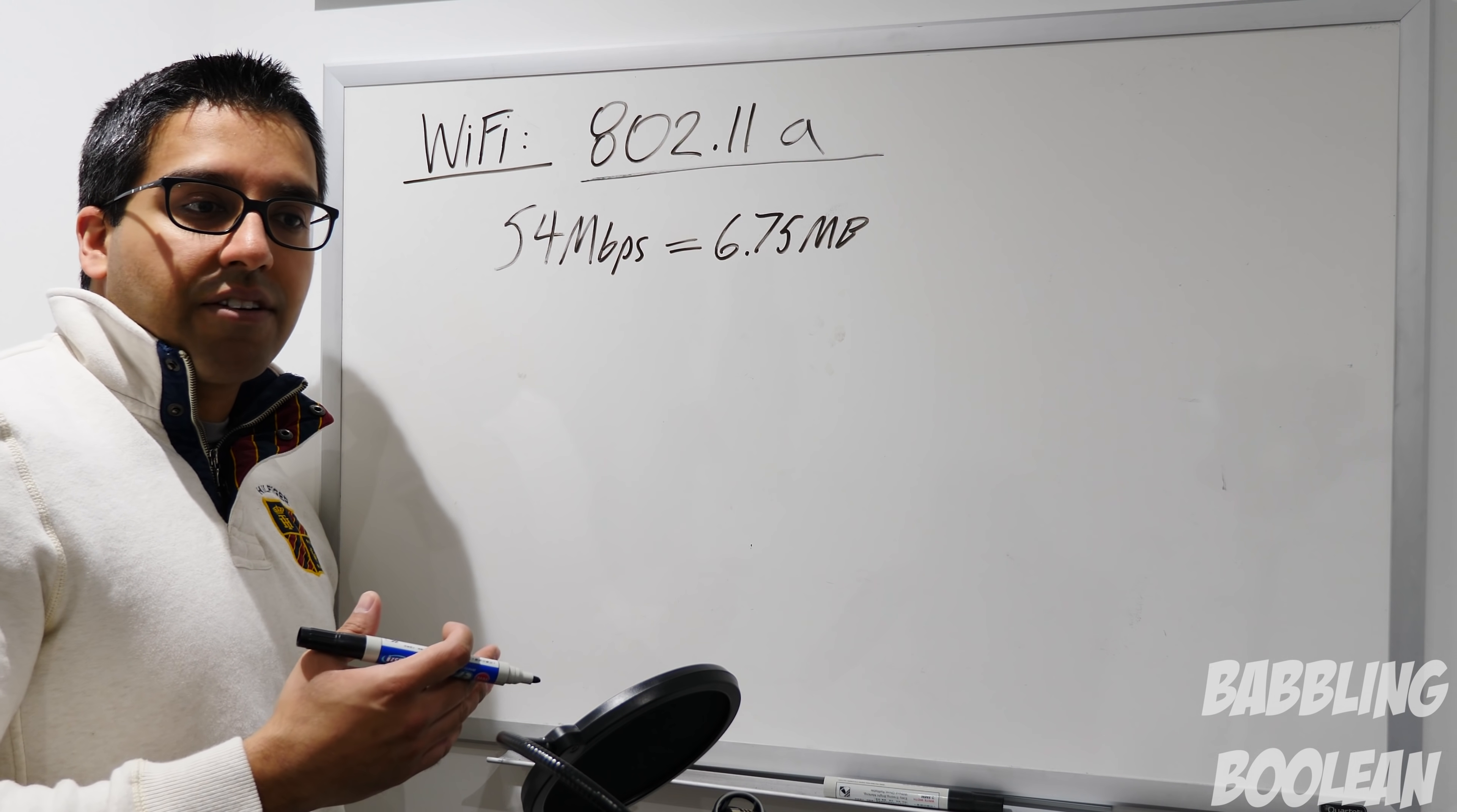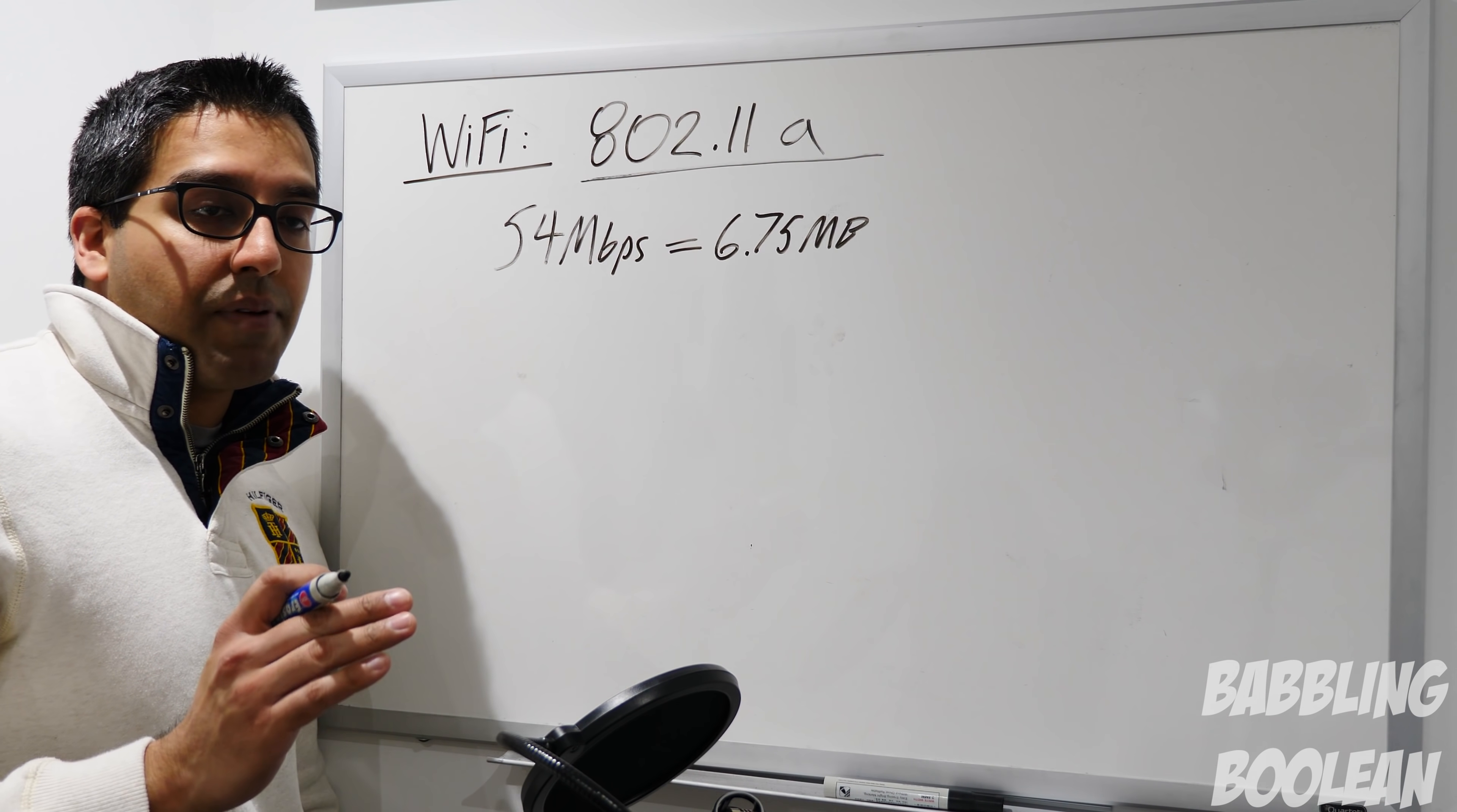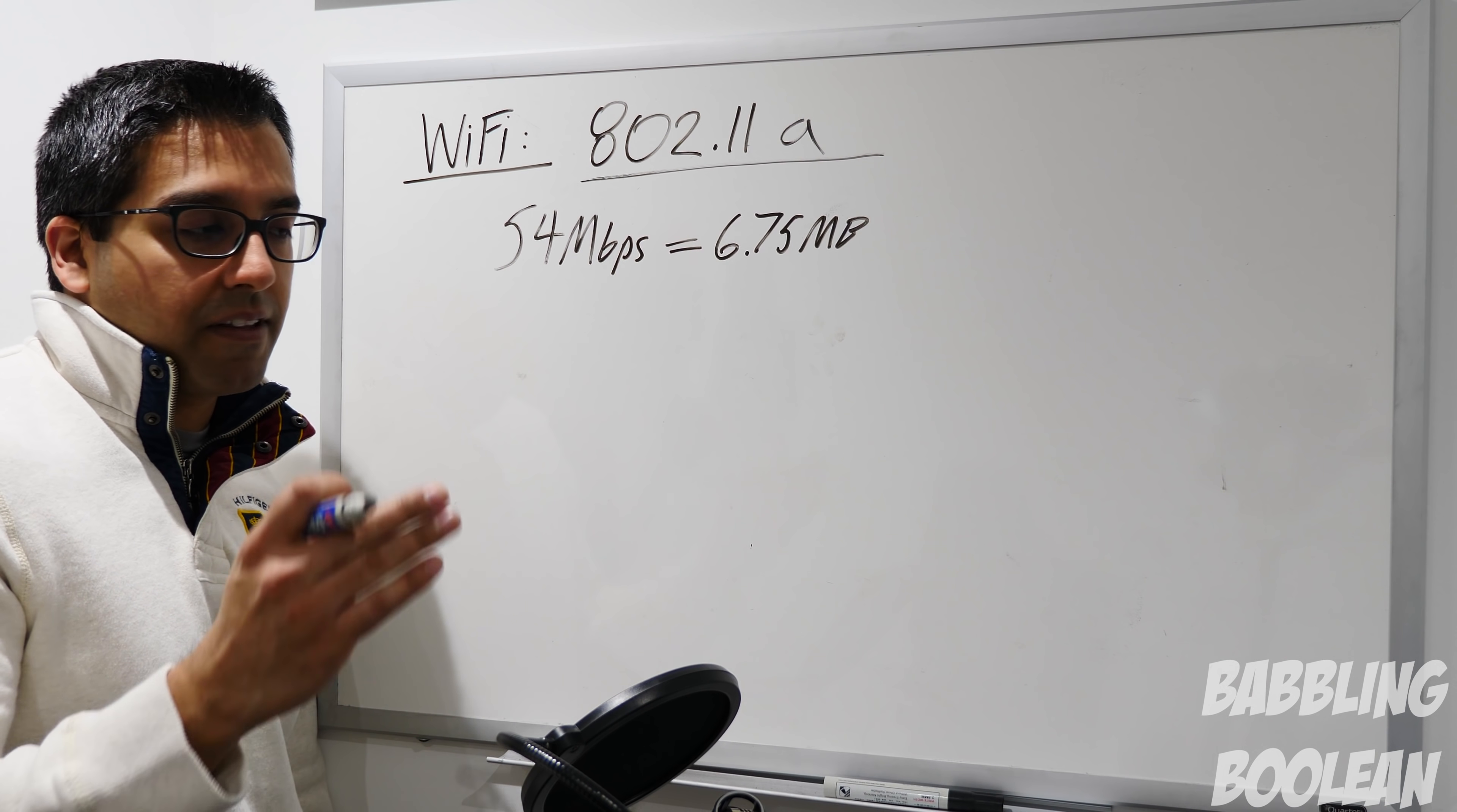In real life you get much slower speeds, and that comes down to numerous factors: how many walls are in between your device and your wireless access point, which I'll just be referring to as AP or access point for the rest of this video, and how many other devices on the same network are causing interference trying to connect to the same access point.